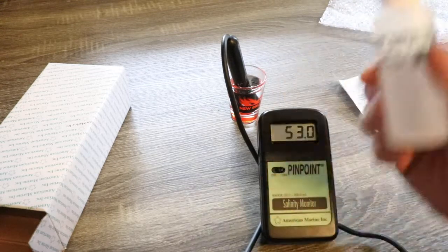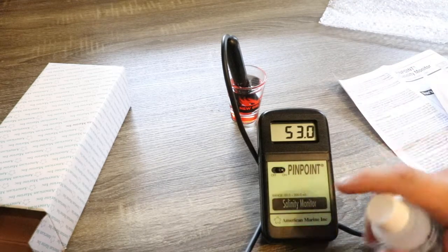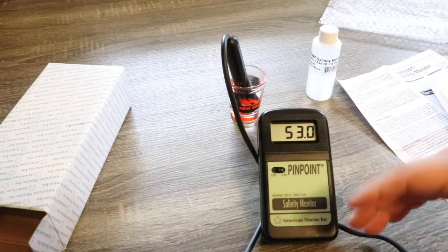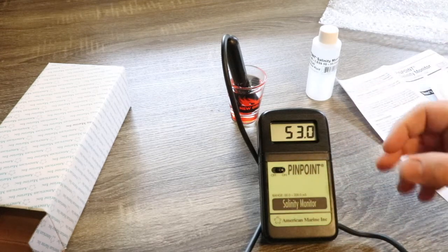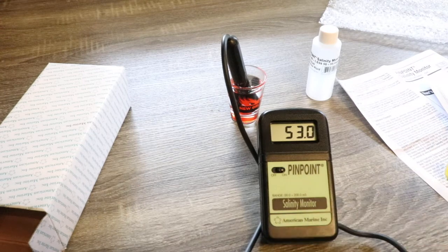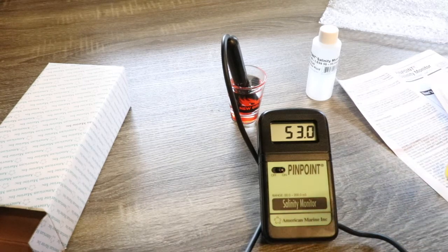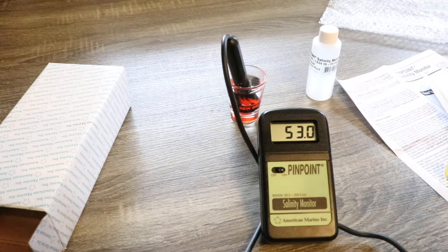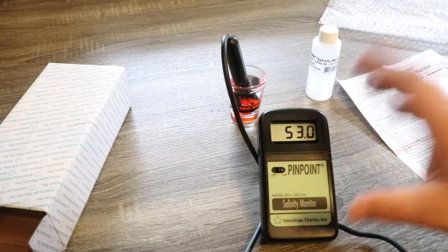It's definitely important to make sure that you have some calibration fluid on hand because it's important to, ever so often, calibrate these probes so you're going to get the accurate reading that you're looking for. This is just another way that you can have a little bit of redundancy in measuring your salinity in your tank water or even your salt water that you're mixing to make sure that the devices that you're using to measure your salinity are on point.